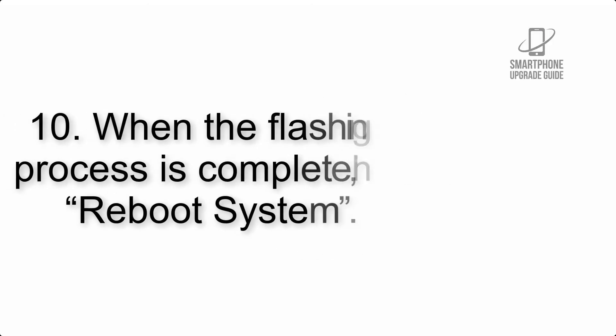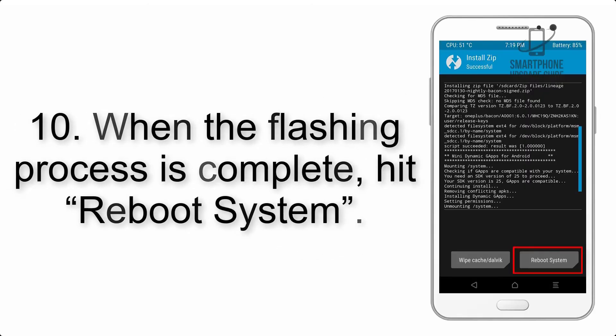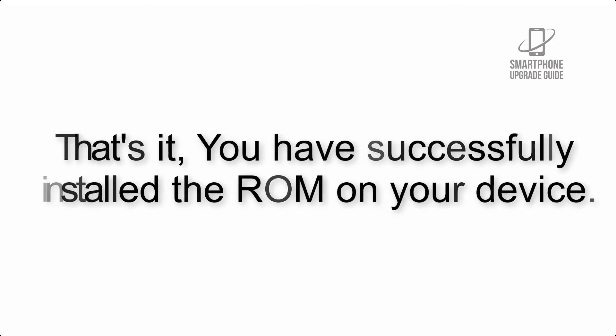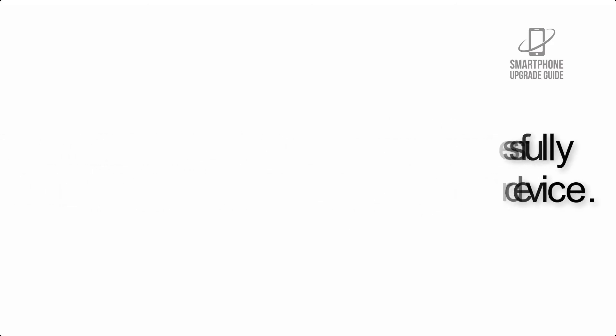Step 9: After Gapps flashing completes, select Wipe Cache and Dalvik from the bottom left side of the screen and swipe to wipe. Step 10: When the flashing process is complete, hit Reboot System. That's it — you have successfully installed the ROM on your device.